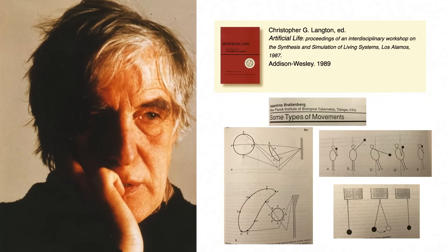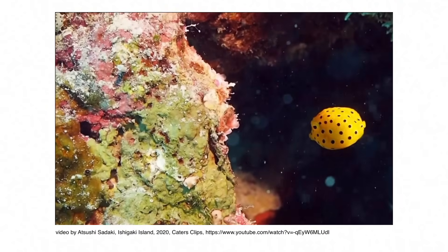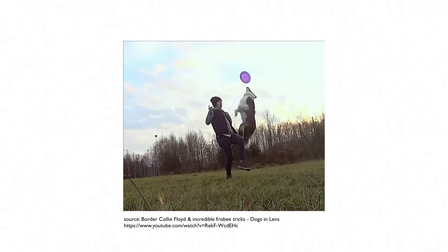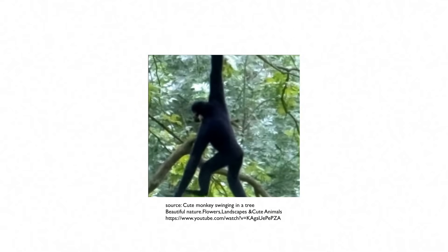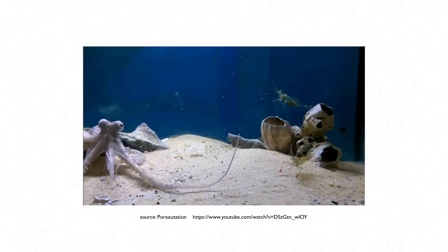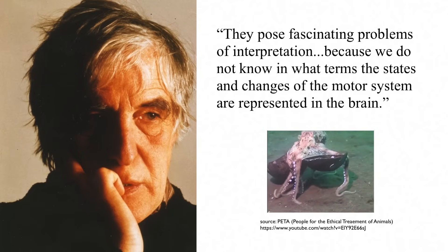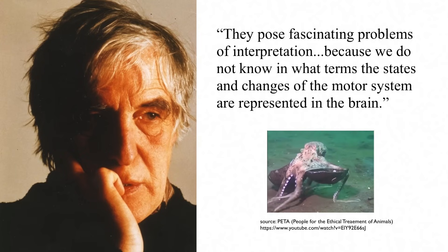Valentino Breitenberg wrote a paper for the A-Life proceedings in 1989 called Some Types of Movements. In contrast to simple aquatic animals having similar symmetry to his vehicles, larger animals with articulated appendages have motor control systems that must deal with many degrees of freedom. They pose fascinating problems of interpretation because we do not know in what terms the states and changes of the motor system are represented in the brain. And he ends with this.